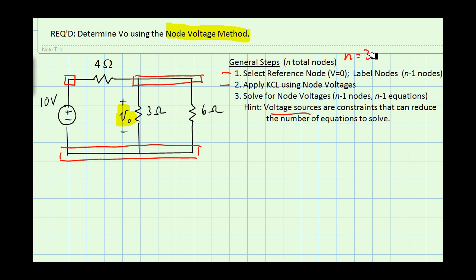Now I'm going to label the bottom node as the reference node. That's what we call ground, so V is equal to zero. We're saying the voltage down at that node is zero.